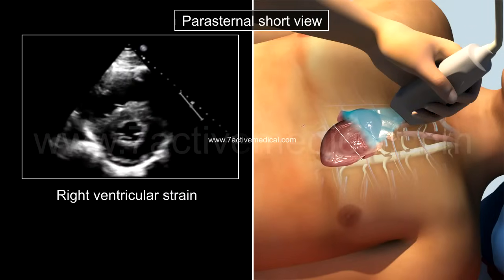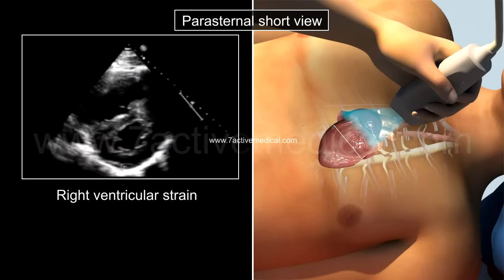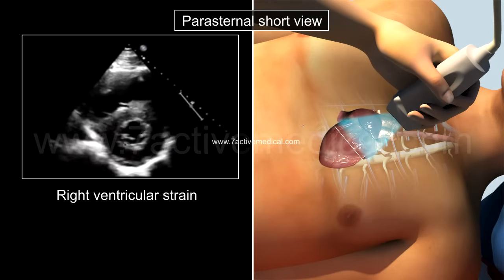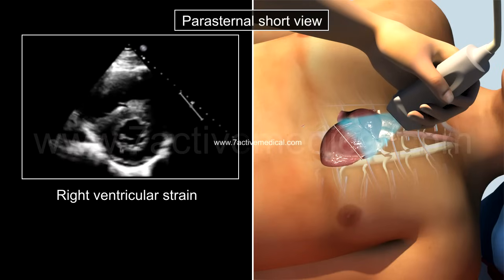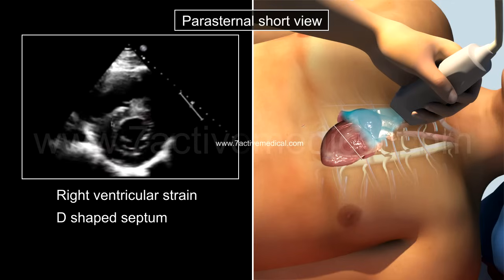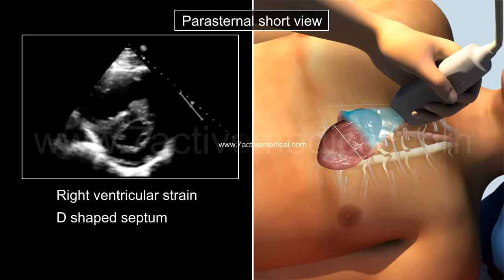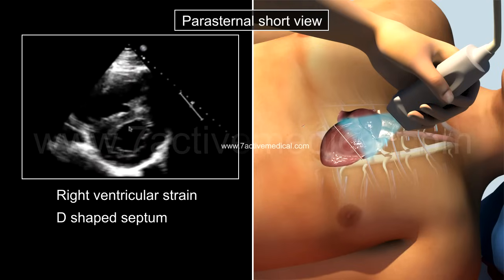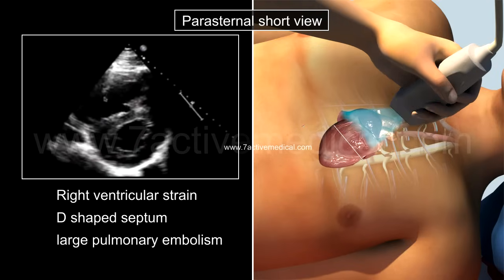Right ventricular strain, in which the right ventricular pressure is greater than the left ventricular pressure, is denoted by a D-shaped septum, caused by the bowing of the interventricular septum into the left ventricle. This is typically seen in the case of a large pulmonary embolism.